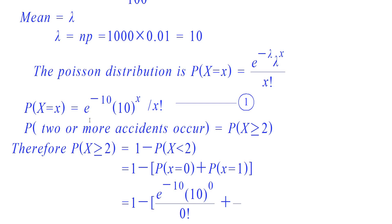To find the probability of X equals 1, we just put X equals 1 and lambda equals 10 in equation 1. Then we get e raised to minus 10 times 10 raised to 1 by 1 factorial.